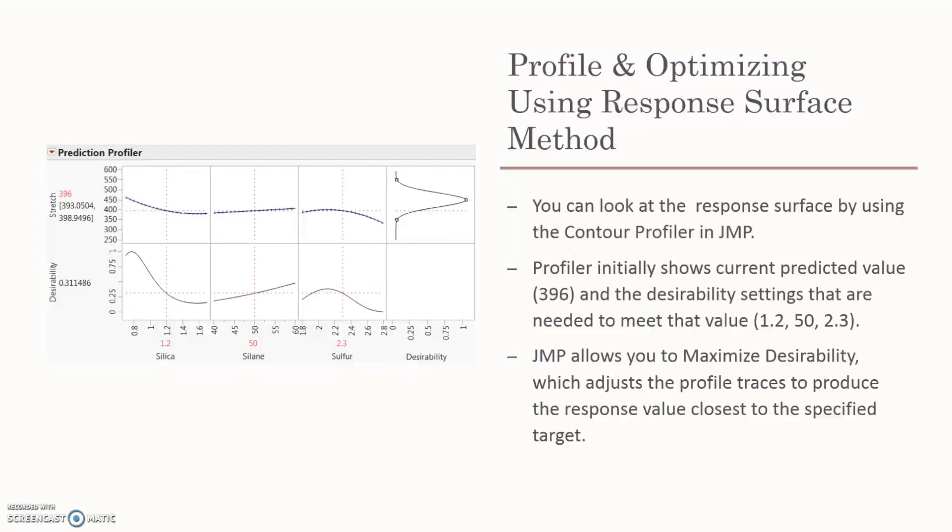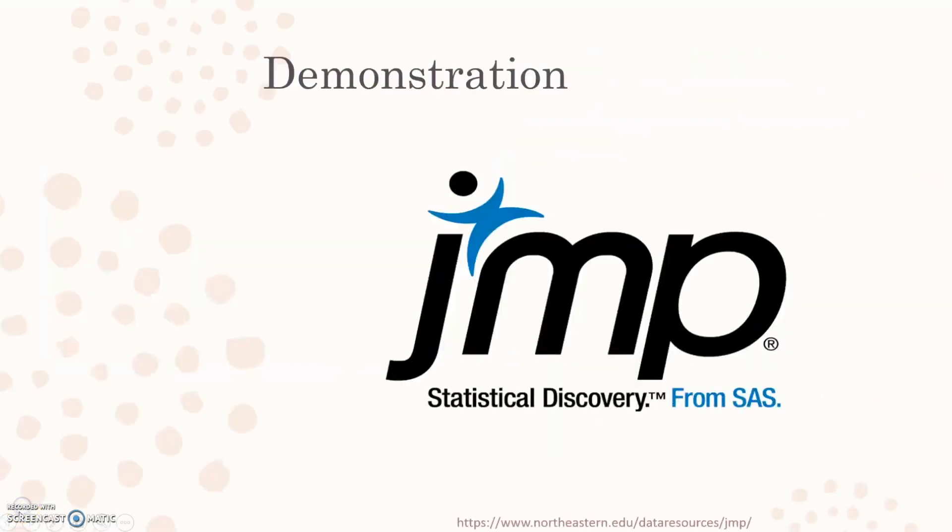JMP allows you to maximize the desirability, which adjusts the profile traces to produce the response value closest to the specified target. You would just click this arrow and click maximize desirability, and these values would change to show you the best one. Now I'm going to hand it over to Alana to demonstrate the popcorn DOE in JMP.